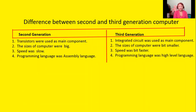These are the differences between second and third generation computers. The first difference is the main component. The main component of second generation computers was the transistor — transistors were used as the main component in second generation computers.